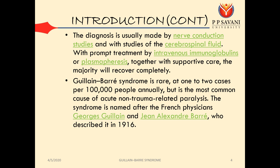Guillain-Barré syndrome is rare — about one to two cases per one lakh population annually — but it is the most common cause of acute non-trauma-related paralysis. Specifically in children, it is a major cause of non-trauma-related paralysis; directly by infection, the patient can get paralyzed. The syndrome is named after the French physicians Guillain, William, and Jean Alexandre-Barré, who described it in 1916.